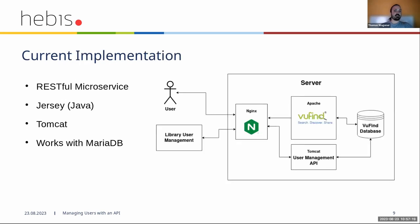So how did we do this? At the point when we developed it, the simplest solution for us was to create a separate service for this in Java. We work with MariaDB. In our setup, users can still use our VuFind installation behind an nginx proxy, and VuFind communicates with the VuFind database. The library management system can also use this API to perform all these tasks.